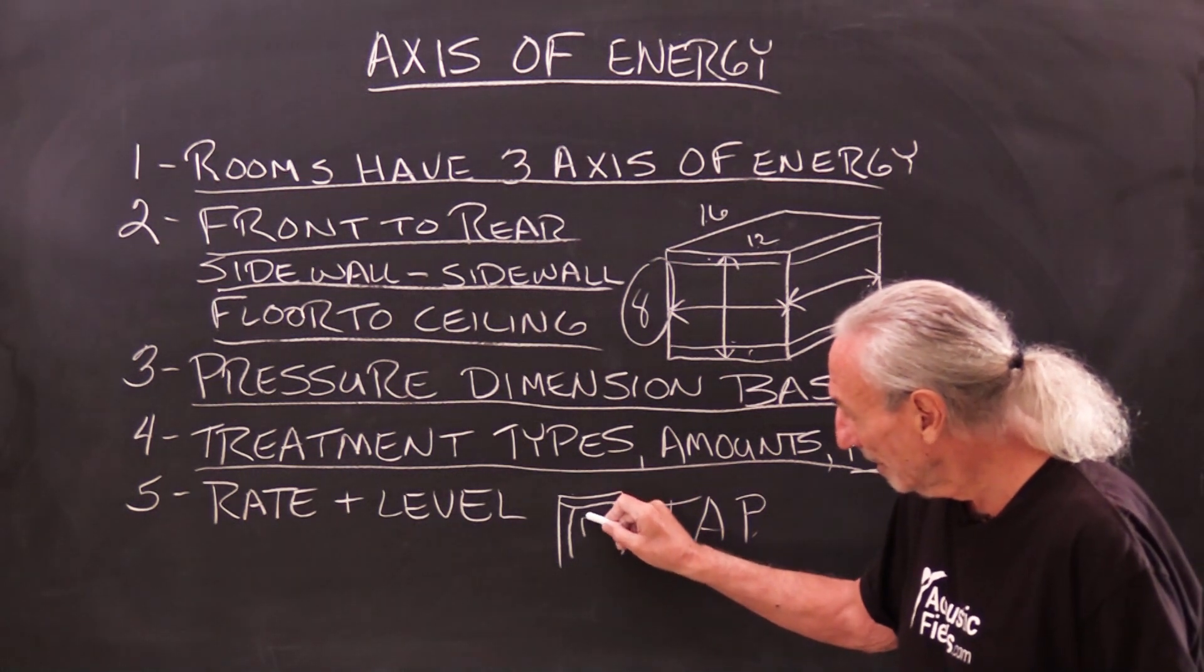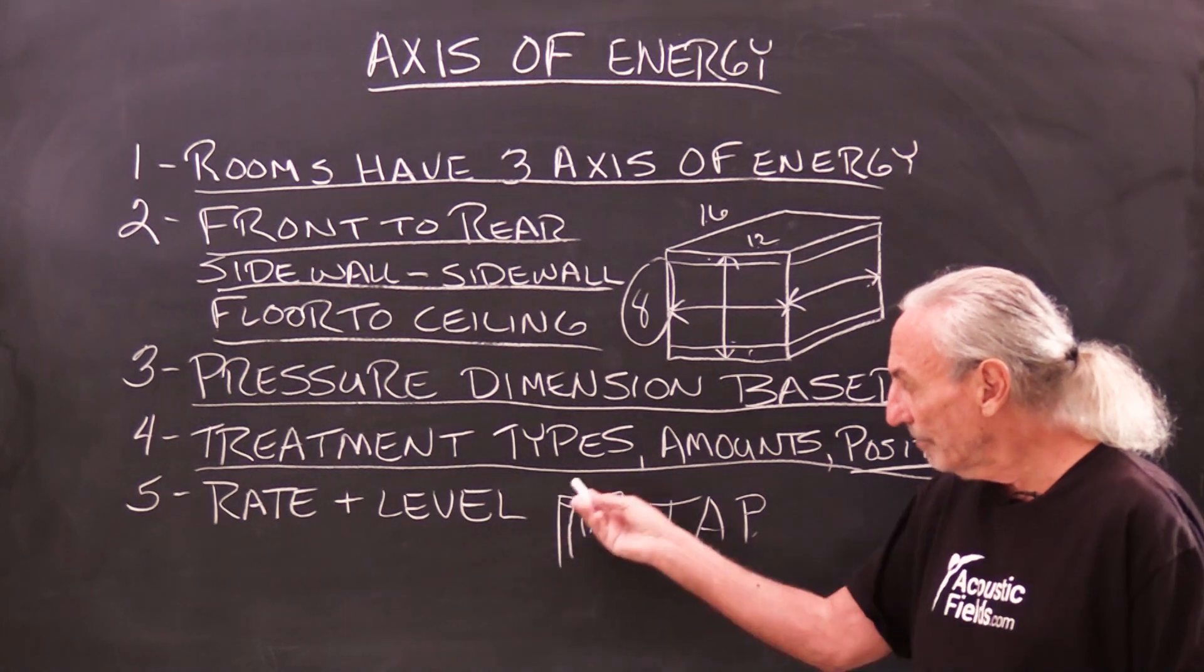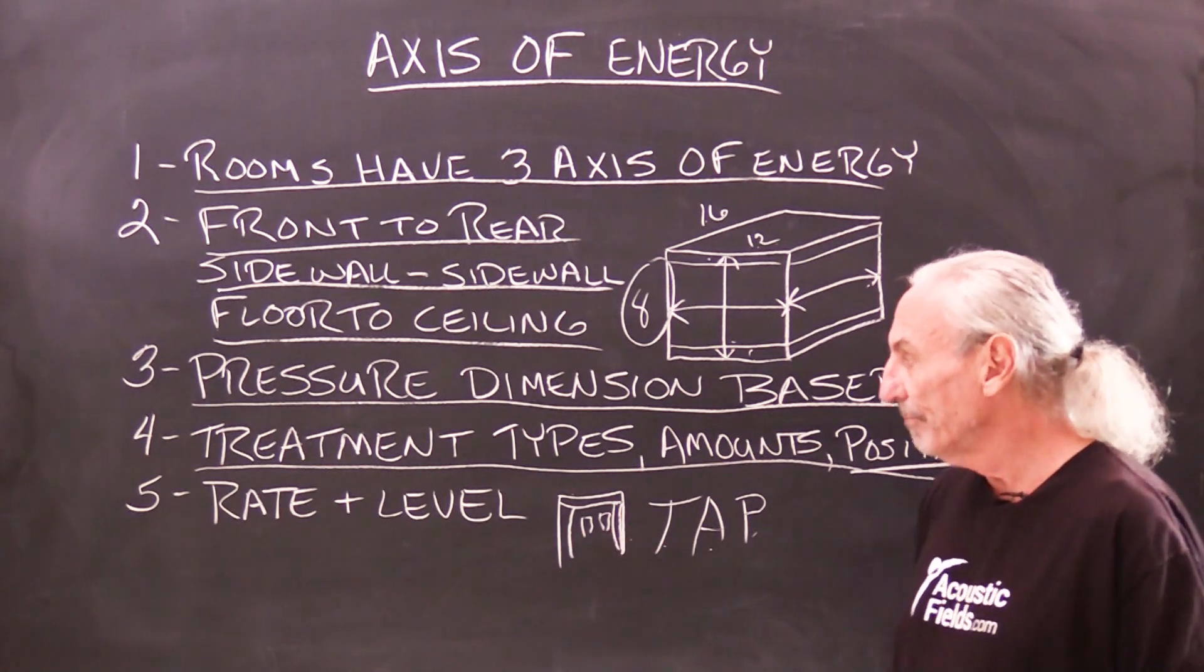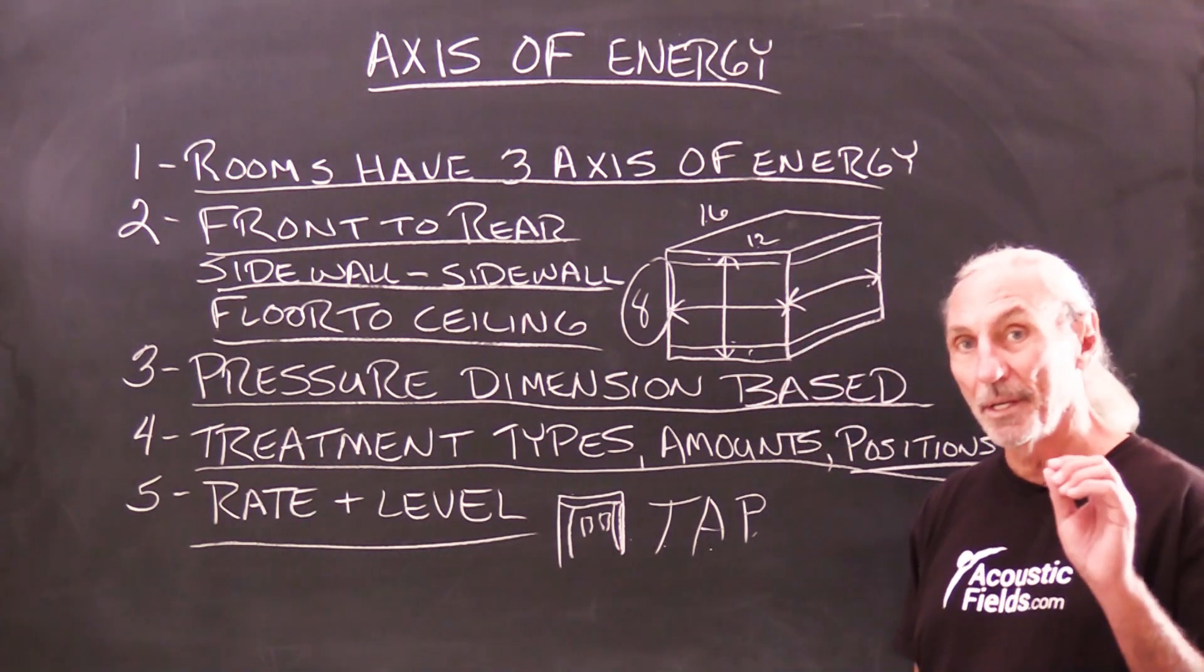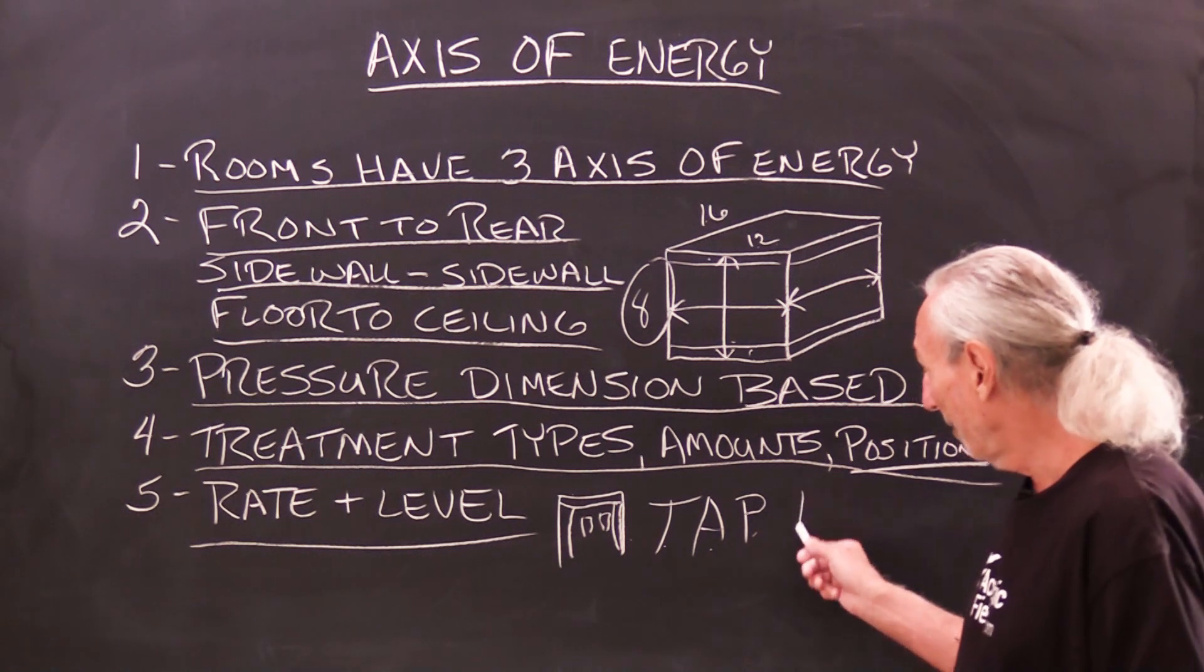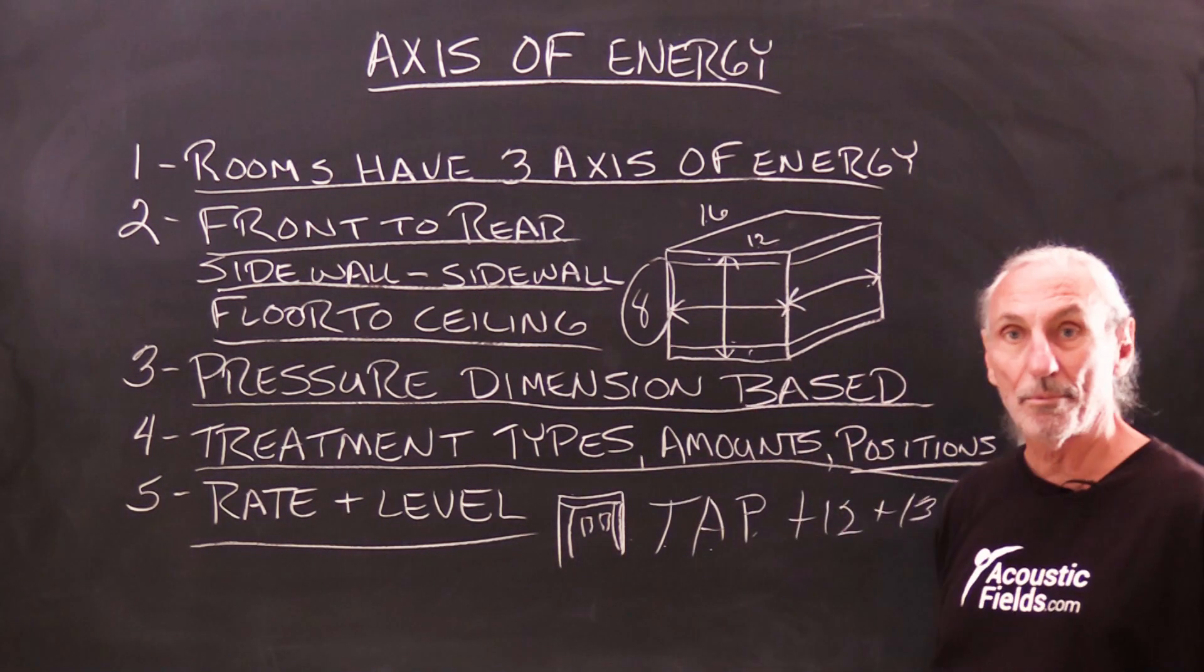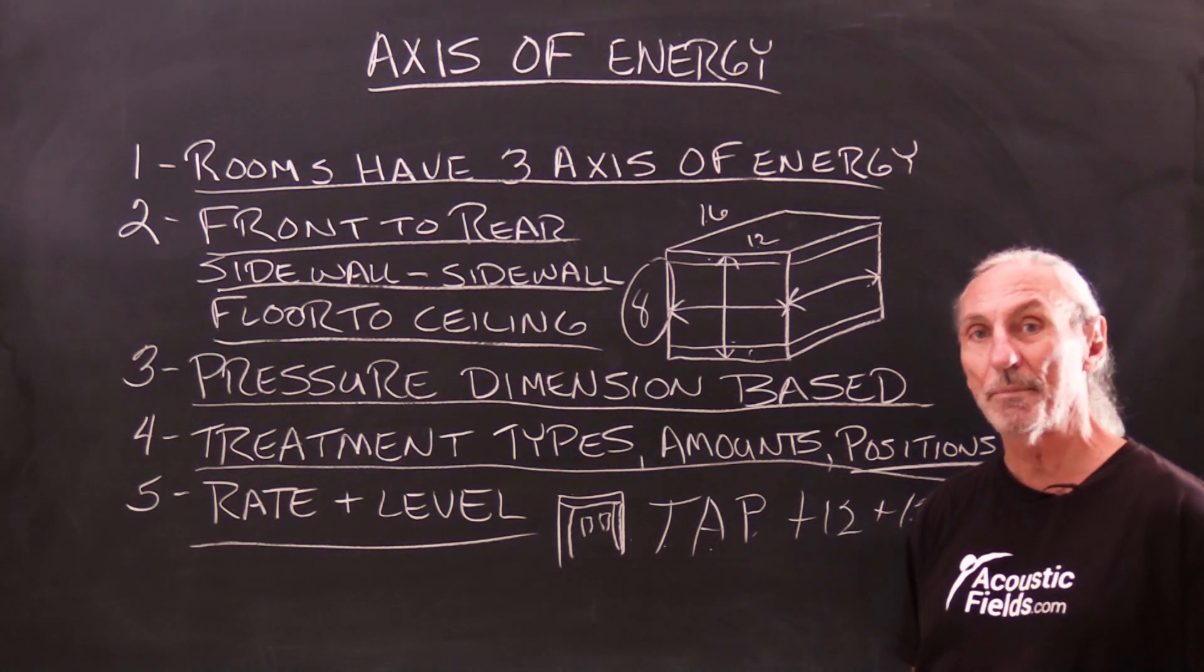Our speakers sit here, so you kind of got that inverted U. You want to make sure that the treatment types, amounts, and position are wrapped around that. You also want to make sure that the rate and level of absorption is powerful enough to deal with the problem. If you have a plus 12 or plus 13 dB problem from floor to ceiling, side wall to side wall or front to back, you want to make sure you have the horsepower in your treatment to do that.